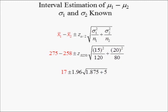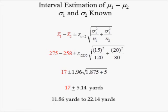15 squared divided by 120 equals 1.875. 20 squared divided by 80 equals 5. Multiplying the z-value of 1.96 times the square root of the sum of 1.875 and 5 yields the margin of error, which equals 5.14 yards. Adding and subtracting the margin of error of 5.14 yards from the point estimate of 17 yards yields a 95% confidence interval estimate of 11.86 yards to 22.14 yards.